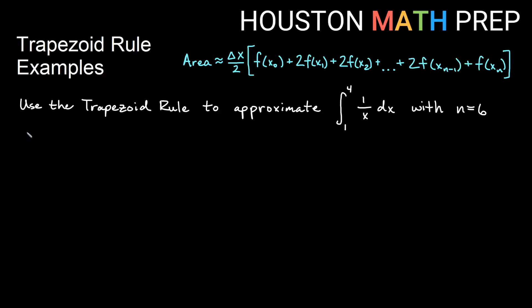So we'll go ahead and find our delta x first. Remember that delta x is always going to be our b minus a over n if we're doing regular intervals. So in this case, we will have 4 minus 1 over 6 intervals. So n is 6. That will be 3 over 6, which would be 1 half.